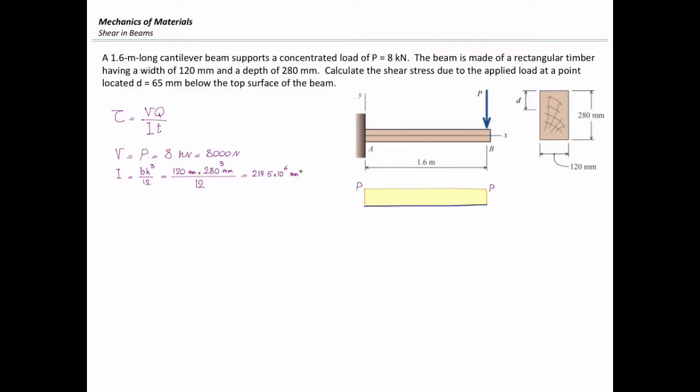The next parameter that I want to determine is Q, the first moment of area. Q depends on what is the point of interest that I have. The equation for Q is A times D, so I need to determine what is the area that I need to determine Q for.